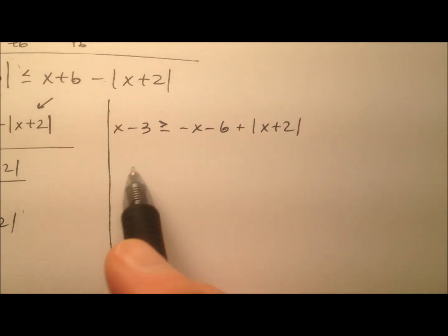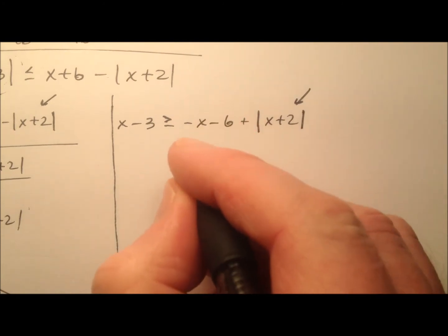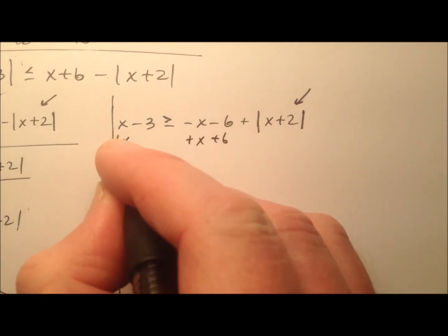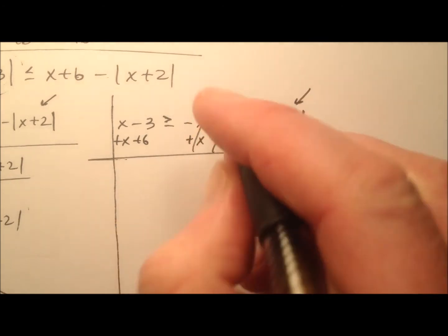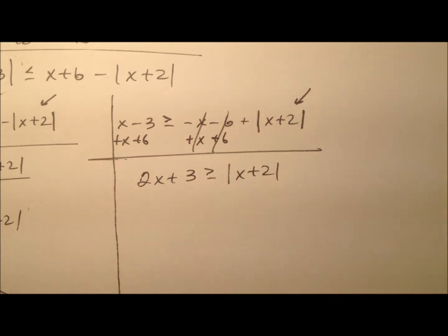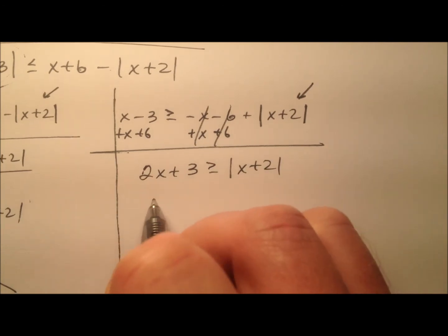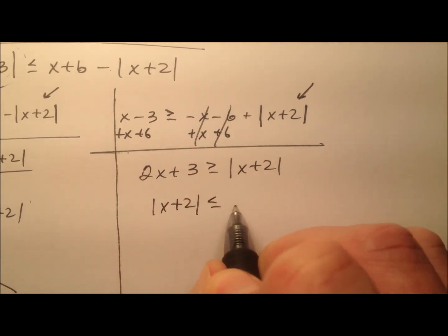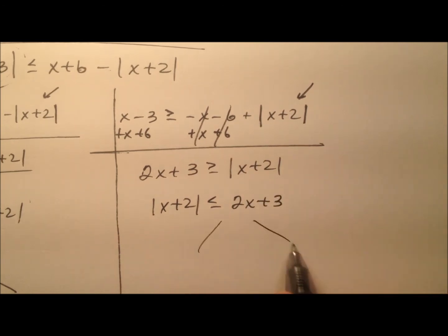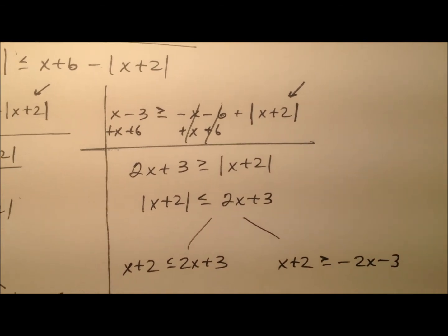Back up here — let's go ahead and solve the second inequality the same way. I notice I have an absolute value expression, so let's isolate it. We'll add x and add six to both sides. So I'll have two x plus three is greater than or equal to the absolute value of x plus two. We'll switch those around so the absolute value expression is on the left side, then split it into two: x plus two is less than or equal to two x plus three, or x plus two is greater than or equal to negative two x minus three.